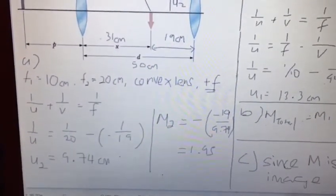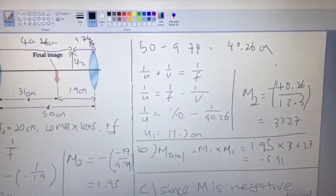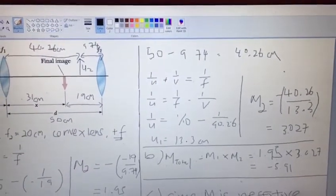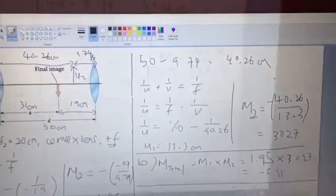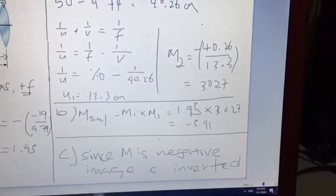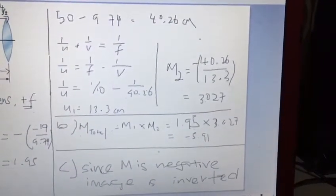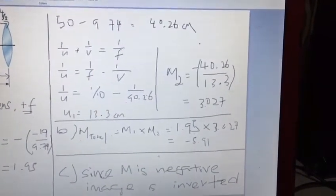To find the image distance of the first lens, we use 50 minus 9.74 and we get 40.26 cm. By using the thin lens equation and substituting all the information into it, we can get the object distance is 13.3 cm.